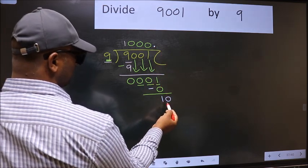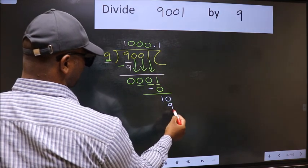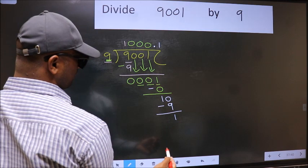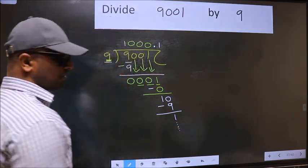So 10. A number close to 10 in 9 table is 9 once 9. Now we should subtract, we get 1. And you continue the division. I am not doing that.